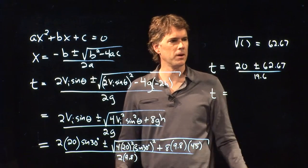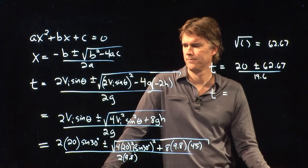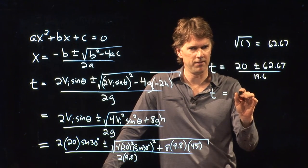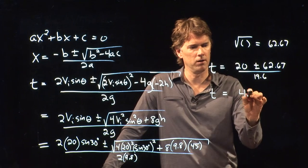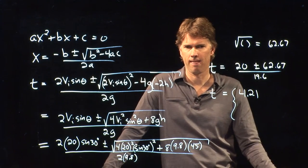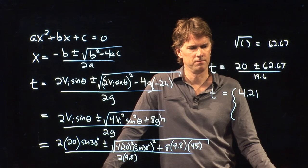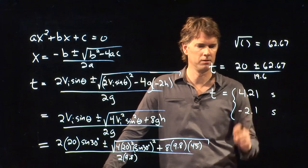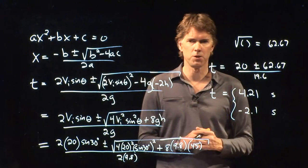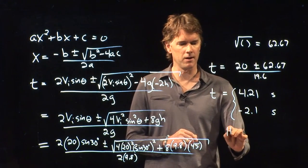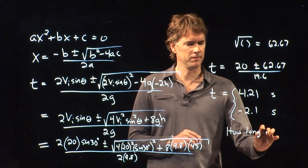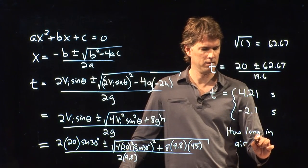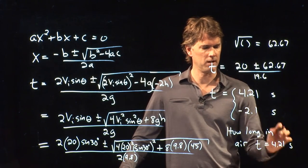So we have 20 plus or minus 62.67. And then we're dividing the whole thing by 19.6. So what do we get for our two possibilities? 4.21. Yes. Positive? Yes. 4.21 is one of the answers. And what's the other one? Negative 2.1. And both of these are seconds. So you look at those and you say, those are my two answers. Which one do you like? How long is it in the air? What are you going to punch in for your homework? Yeah. 4.21. 4.21 seconds, that's how long it's in the air.